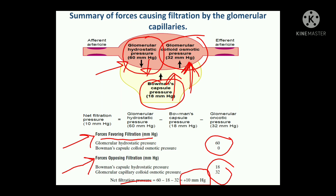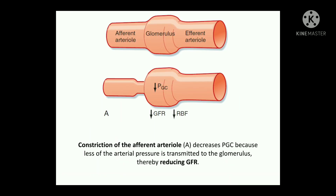Next, we will discuss the regulation of GFR — what factors are basically regulating it. This diagram is taken from Berne and Levy. We will discuss what happens if there is constriction of the afferent arterioles, and what happens if there is constriction of the efferent arterioles, because many diseases and drugs cause constriction or dilation.